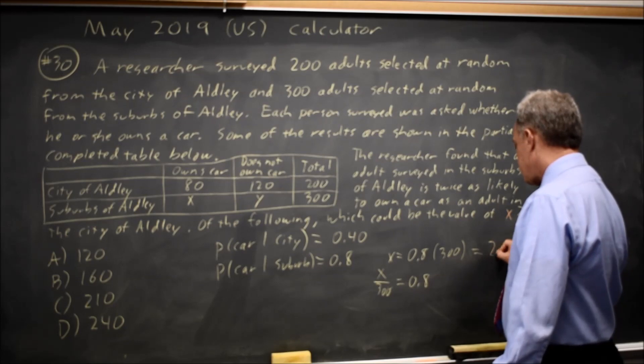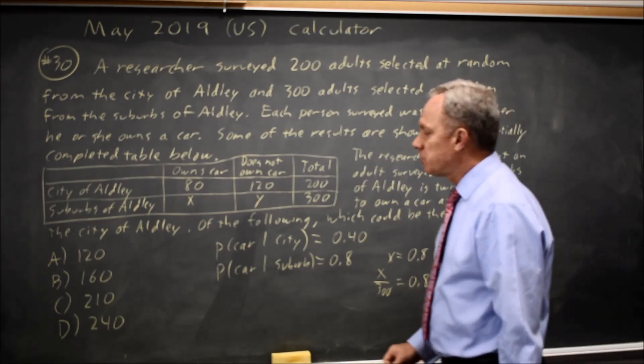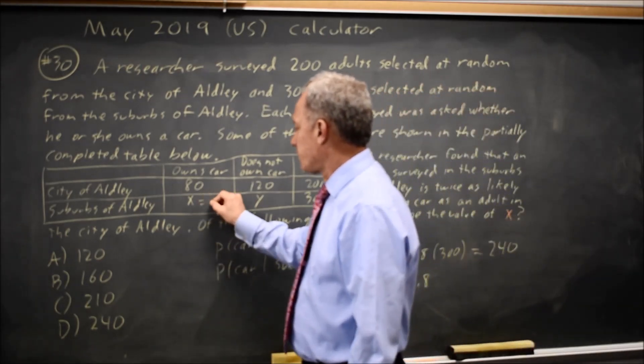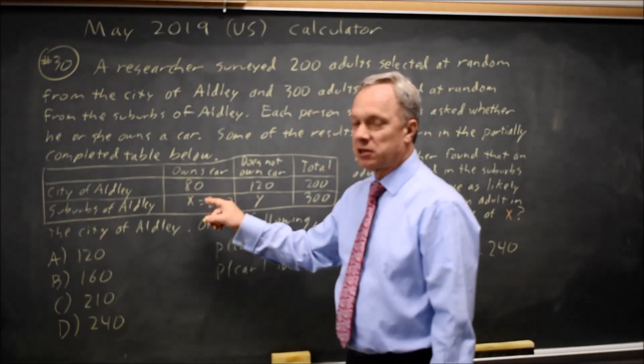Either way, you're going to end up with x equals 240. So 240 adults from the suburbs own a car.